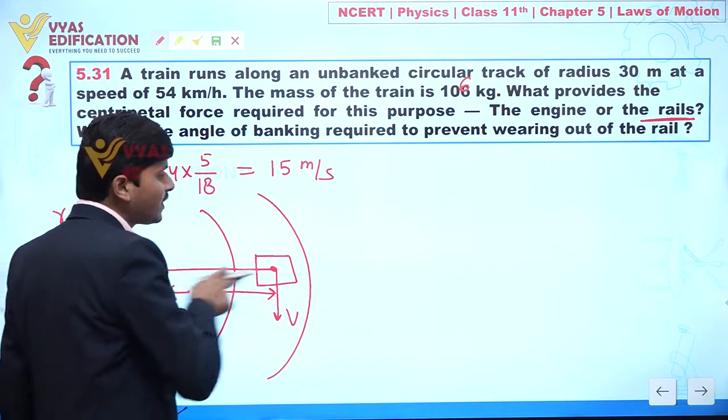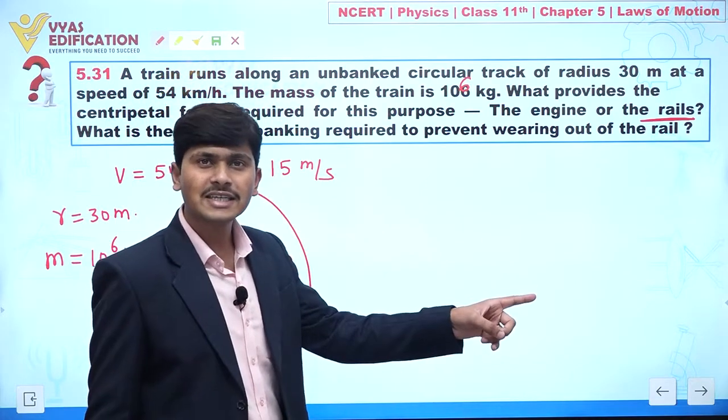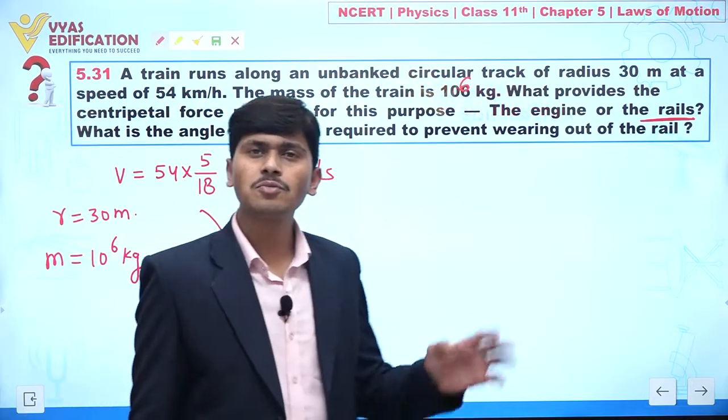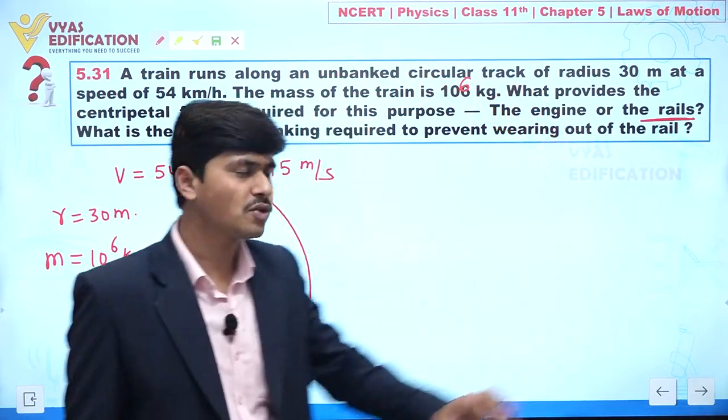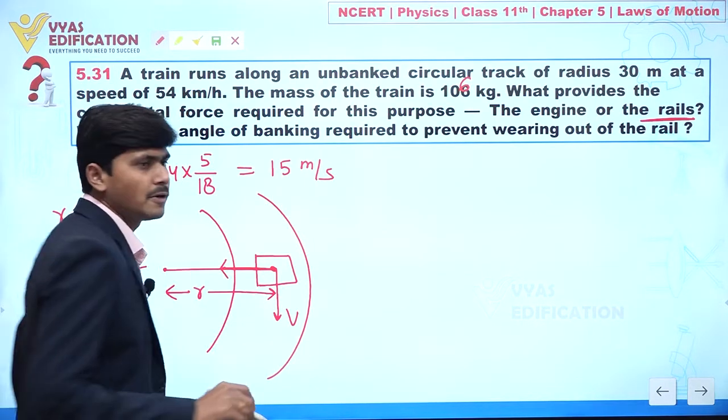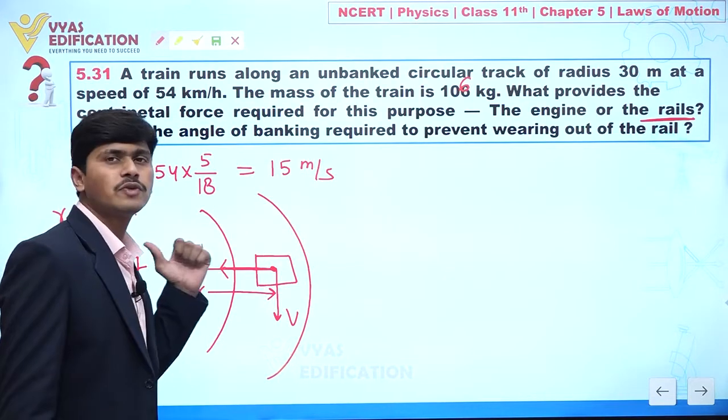At that time you can see because it is having certain velocity, definitely a centrifugal force is acting in the outward direction. But we know here we have a rail and this rail is preventing the train from moving out of the track. It means I can see here a force.